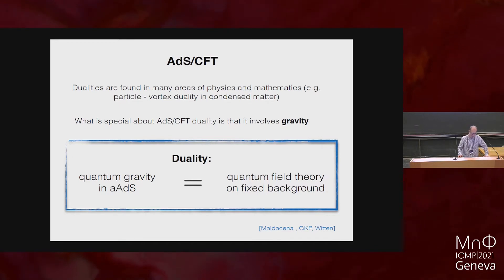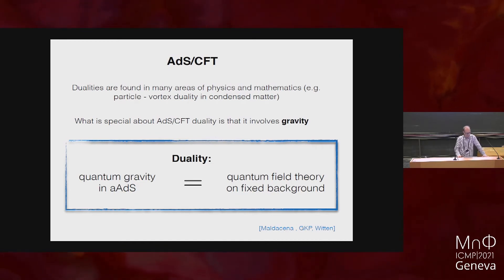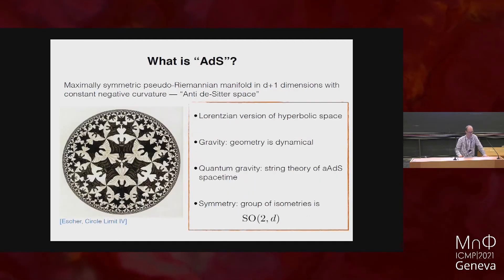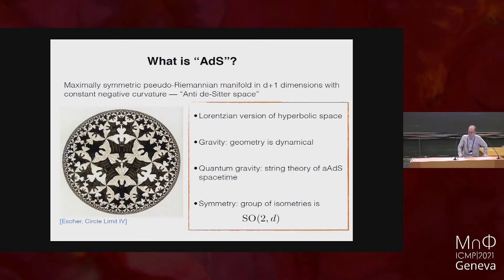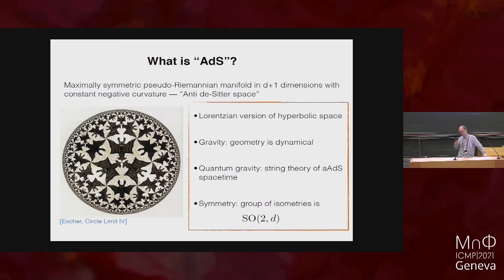What is ADS? ADS is a geometric notion — it's a maximally symmetric pseudo-Riemannian manifold in D+1 dimensions with constant negative curvature, known as anti-de-Sitter space because the positive curvature solution was introduced by Willem de Sitter as a possible background for our universe, and reversing the sign gives anti-de-Sitter space. Another way to define it is as a Lorentzian version — a different signature version — of hyperbolic space or Lobachevsky space.